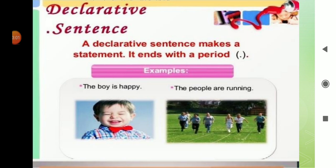First of all, we will see declarative sentences. What's a declarative sentence? A declarative sentence makes a statement. It ends with a period. Declarative sentences give information. For example, the boy is happy. The people are running. There are two examples and both are declarative sentences.